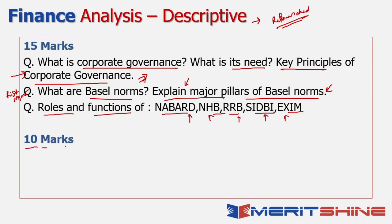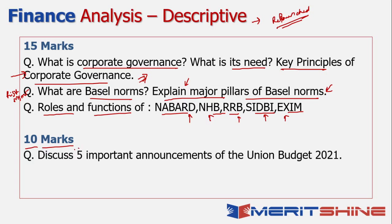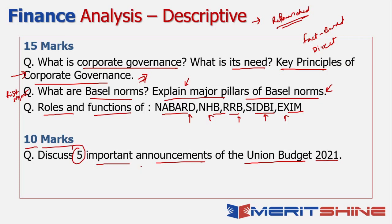The 10-mark descriptive question was also a no-brainer — it asked you to talk about the five important announcements of Union Budget 2021, something covered extensively when discussing the Union Budget. Nothing unexpected in the descriptive paper — it was quite fact-based and direct. Straight questions were asked; all it required was a proper structure, a good introduction and conclusion, and the ideal points mentioned in between.